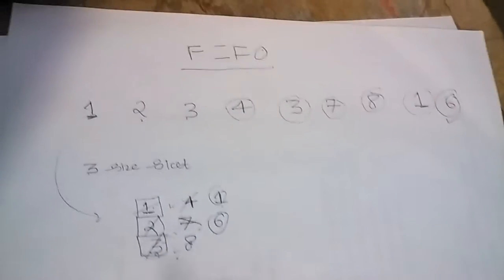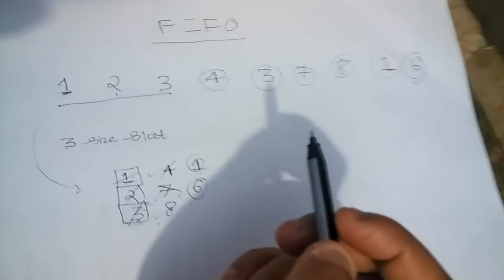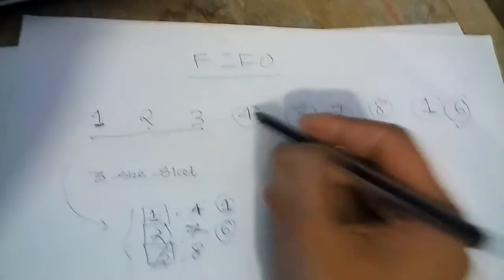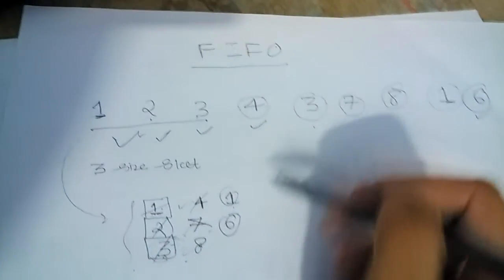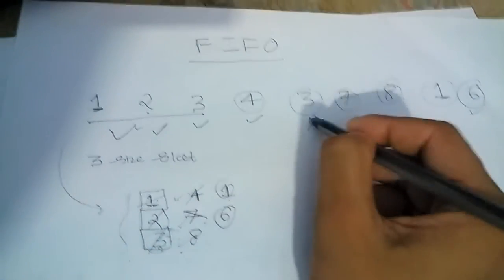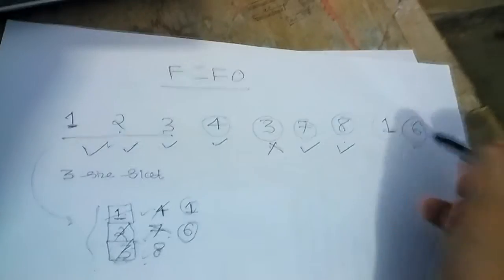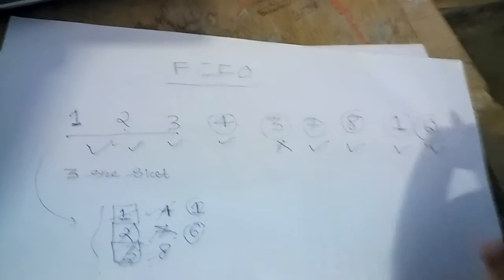So let's see how much number of faults we get. While picking the first 3 places, they are always a fault. We assume that memory was empty. The slots are empty. We brought 4, there was a fault. We brought 3, there was no fault. We brought 7, there was a fault. While bringing 8, there was a fault. While bringing 1, there was a fault. And while bringing 6, there was a fault.